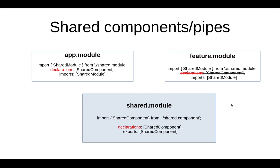Here is another example of shared modules. Let's say that we have a component we would like to use inside of two modules — this is not allowed because we cannot declare the same component under the declarations of two modules, and this will produce an error. The fastest way to solve this is to create one shared module where we list our shared component inside of its declarations and export the component. Then we just import the shared module under the imports of both the app and feature modules. We no longer need duplicate declarations, which eliminates the compilation error. This way the shared module helps us by encapsulating the shared component into its own namespace so it will not cause problems when used in multiple modules.